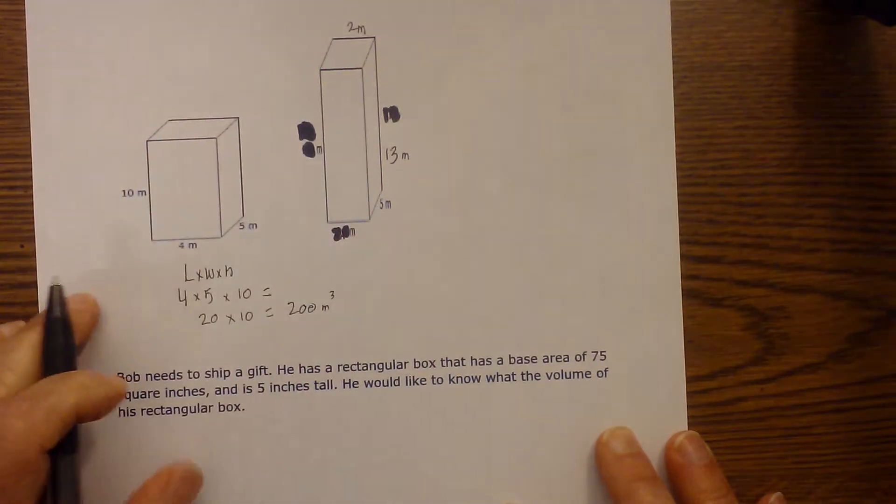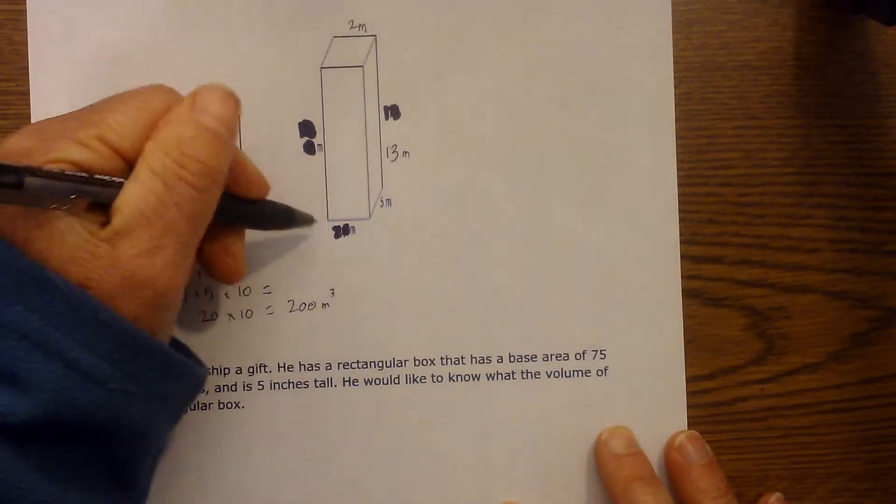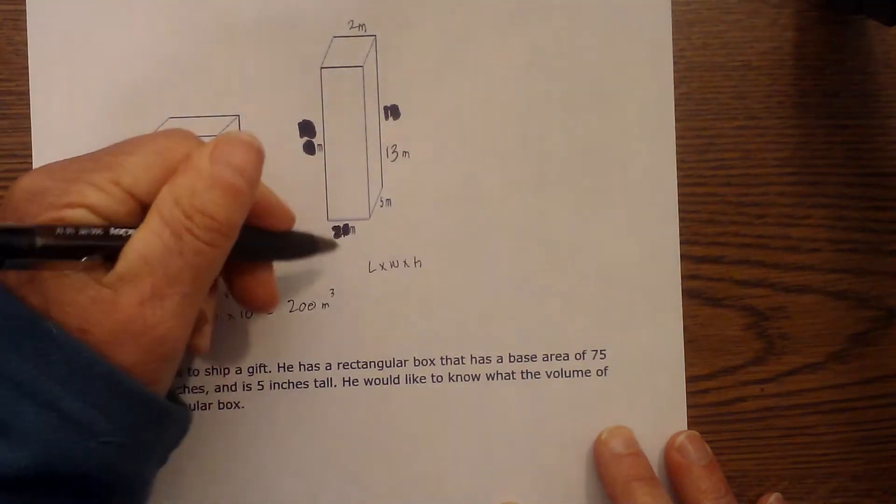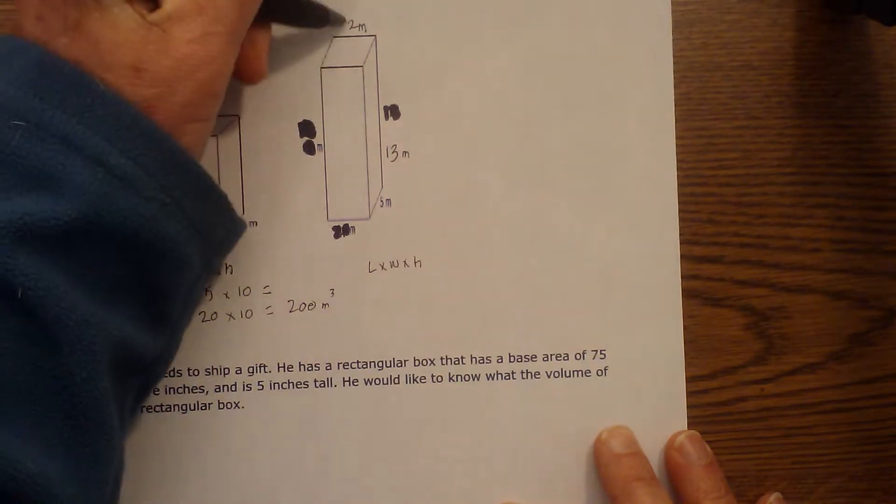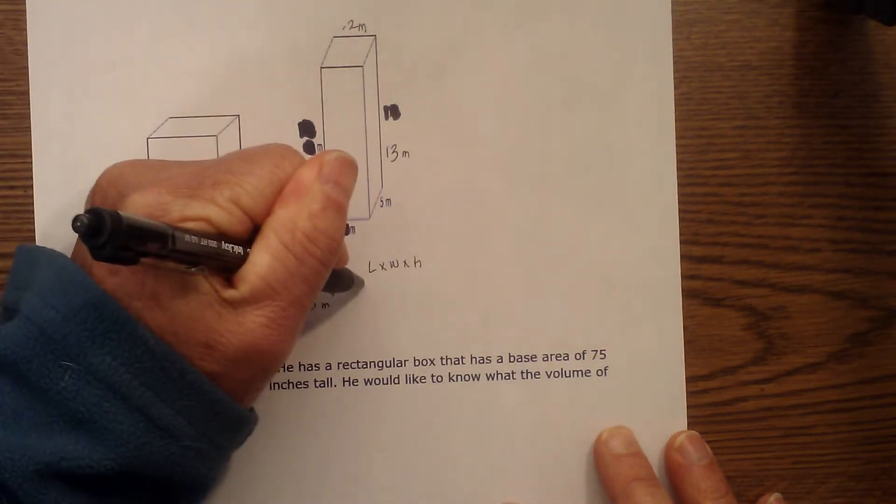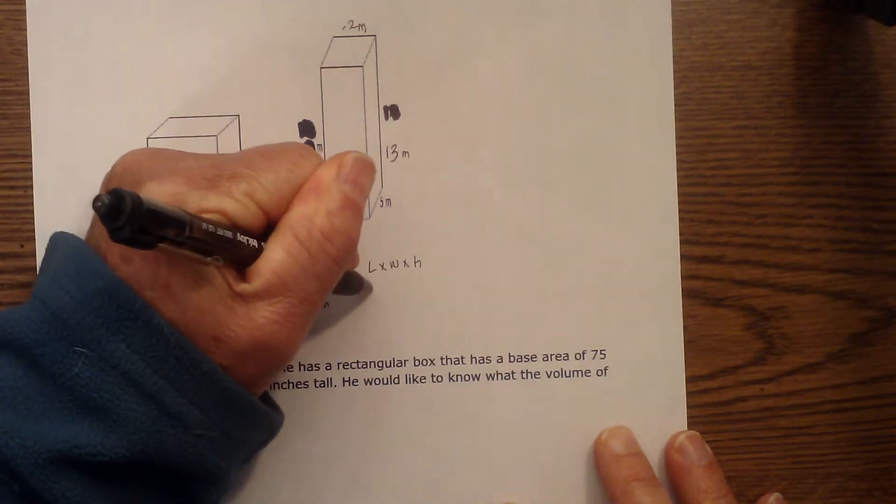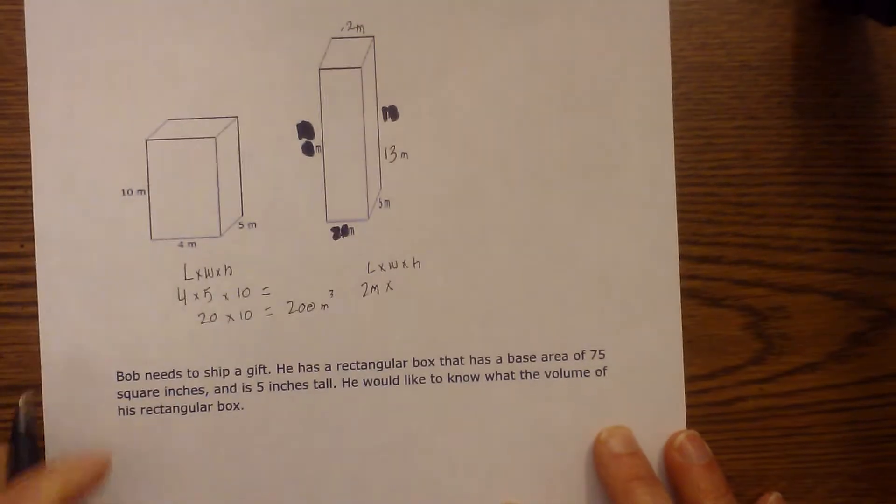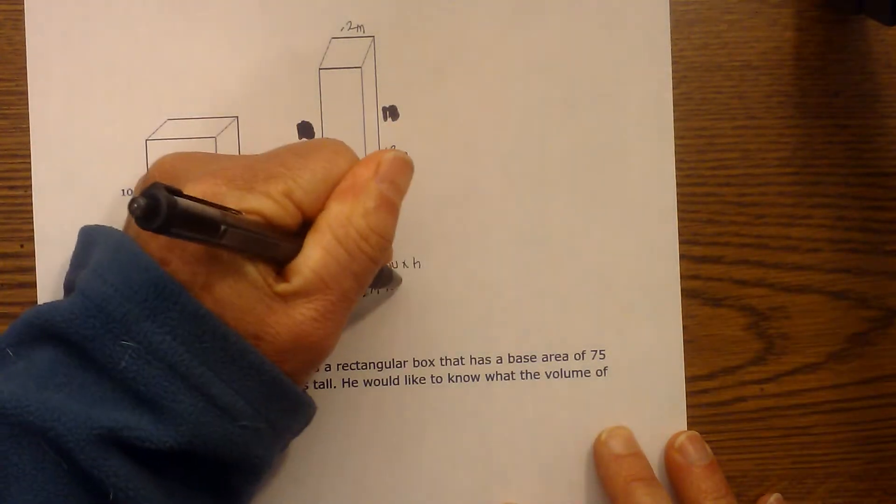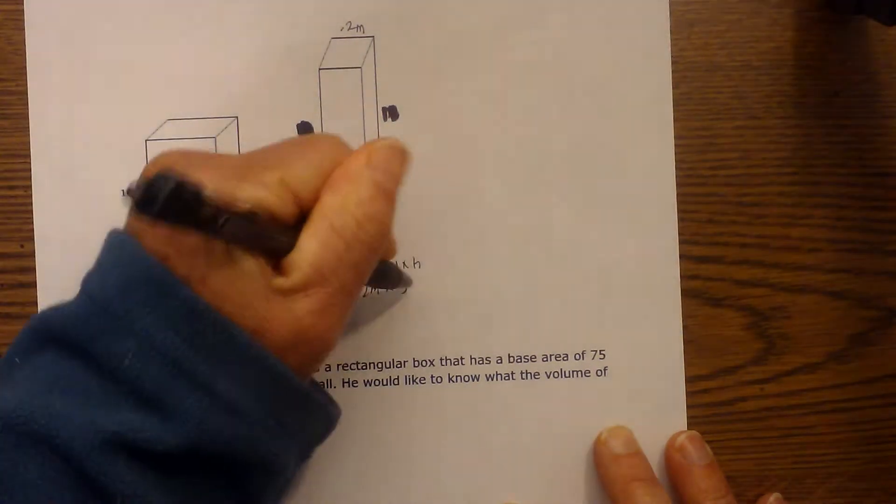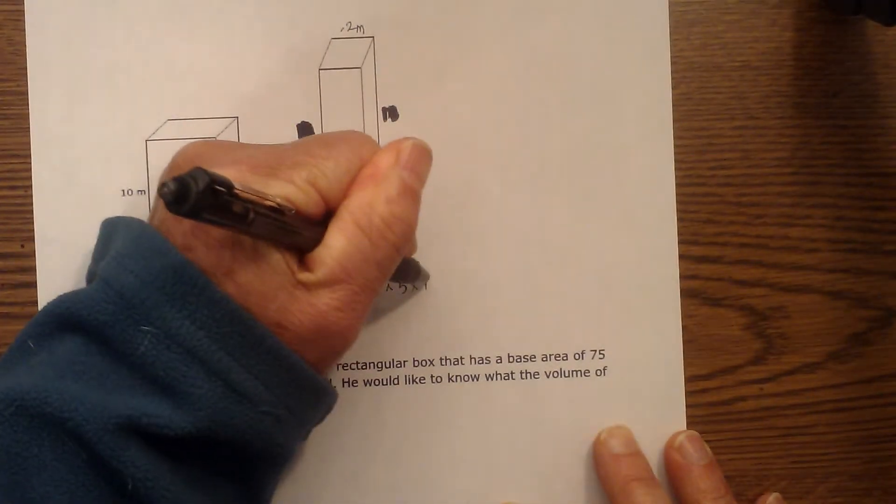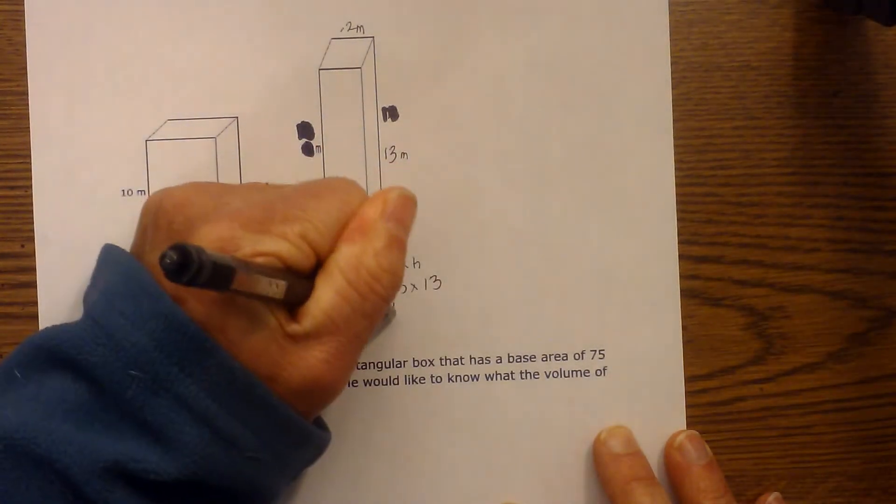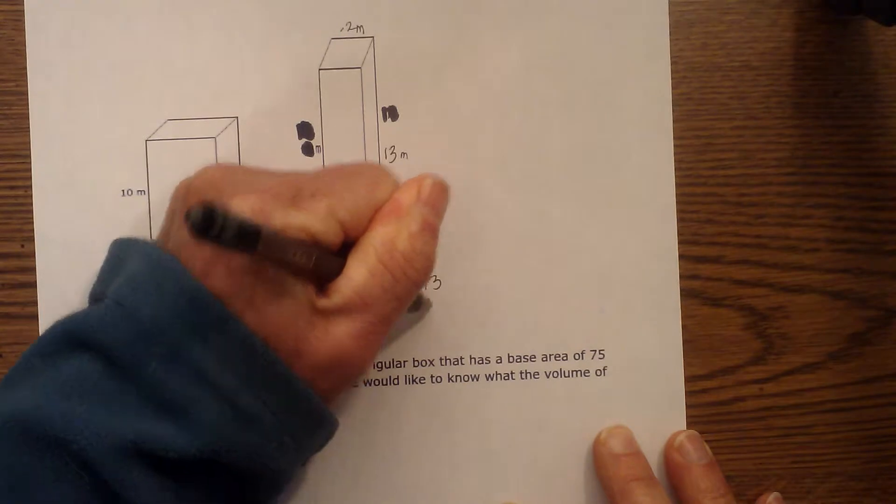Ok, so again we're going to use length times width times height. And so the length is 2 meters. Next we have the width of 5, and then the height is 13. Ok, so now we have 2 times 5 is 10, times 13 is equal to 130 meters cubed.